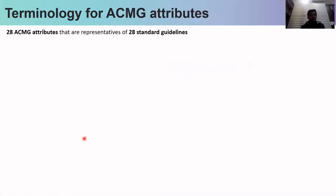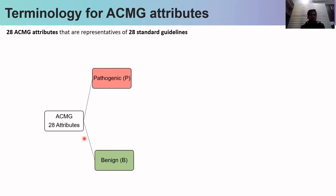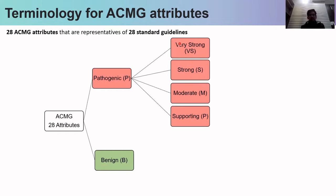As I've already told you in the previous session, ACMG follows 28 standard guidelines, which are represented by 28 ACMG attributes. These 28 ACMG attributes have been divided into two categories: pathogenic, denoted by P, and benign, denoted by B. Pathogenic variants are further divided into four categories based on evidence: very strong (VS), strong (S), moderate (M), and supporting (SP).